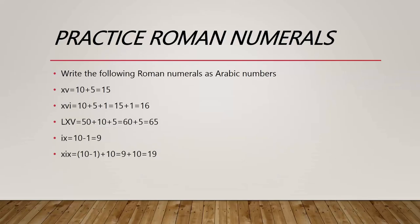LXV: L is 50, X is 10, V is 5, so 50 plus 10 plus 5 equals 65. IX is a special case — I comes before X, so we subtract: 10 minus 1 equals 9.